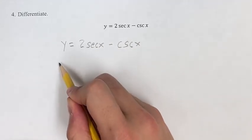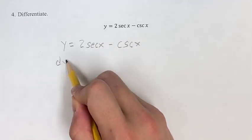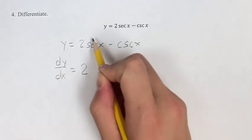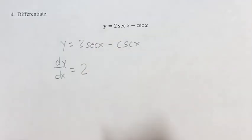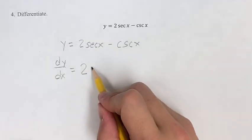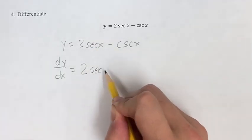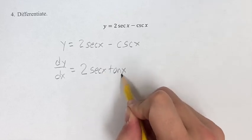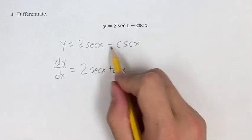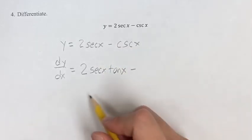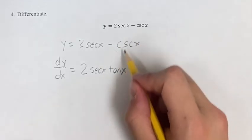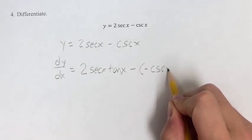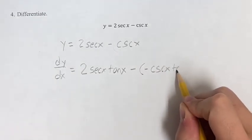So our derivative dy/dx is going to be equal to 2 times the derivative of secant x, which is secant x tangent x. This is going to be minus the derivative of cosecant x, which is negative cosecant x tangent x.